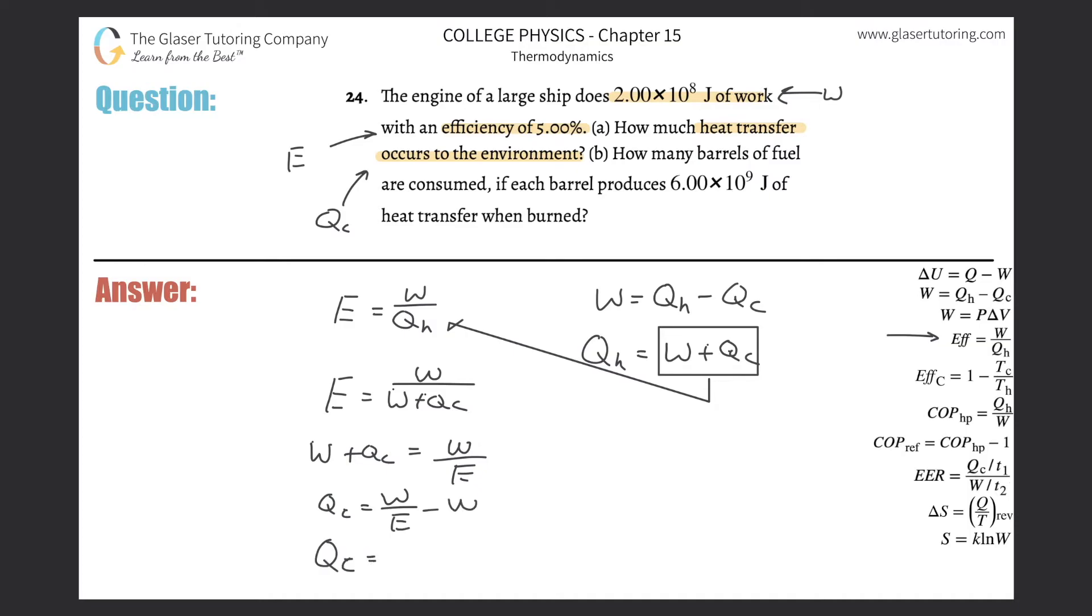I'm going to calculate now. The work they told us is 2×10^8, divided by the efficiency which is 5% (in decimal form), minus 2×10^8. What do we get?